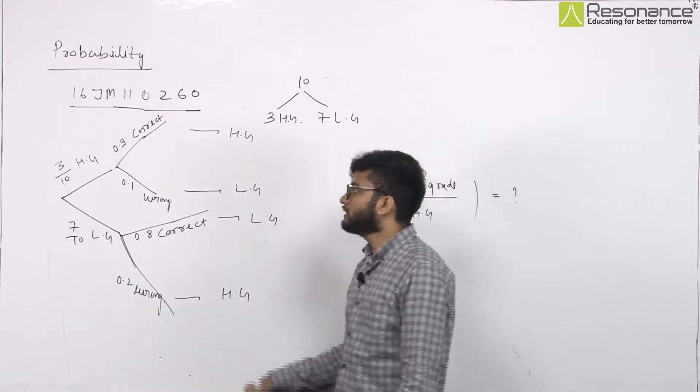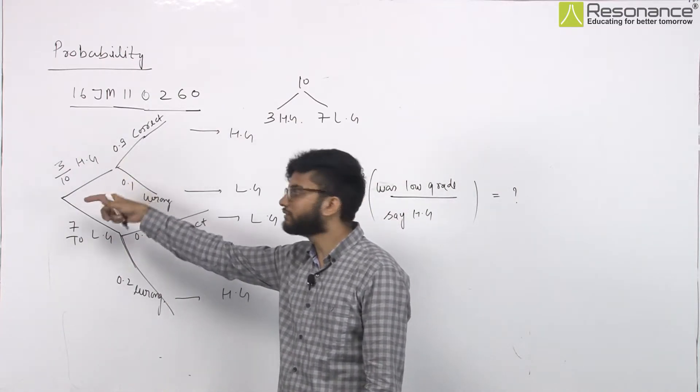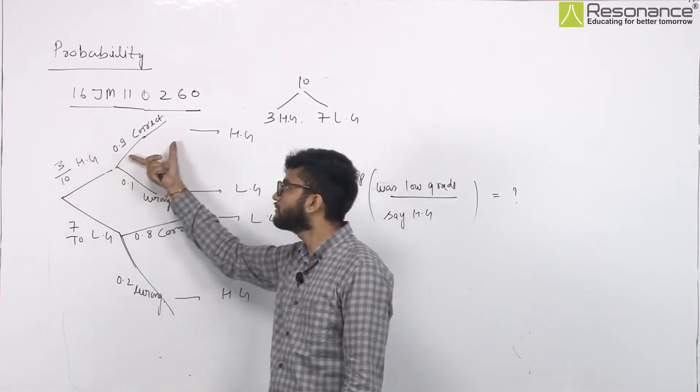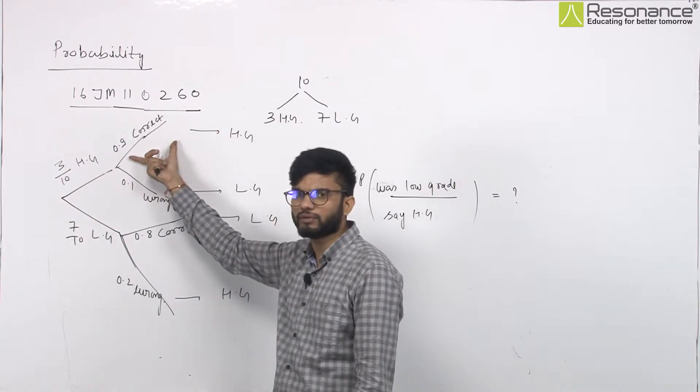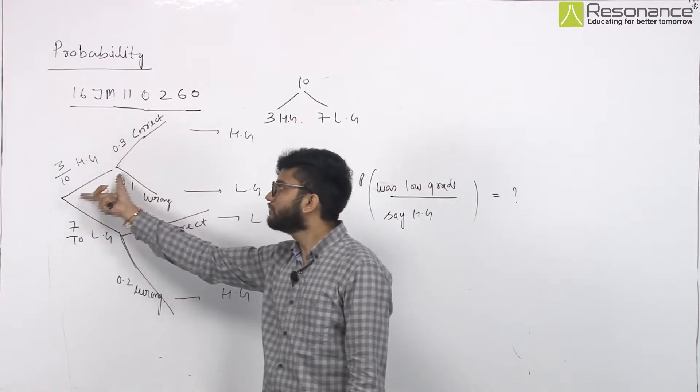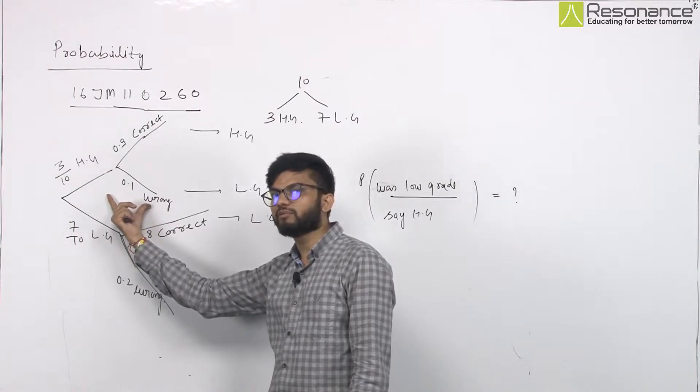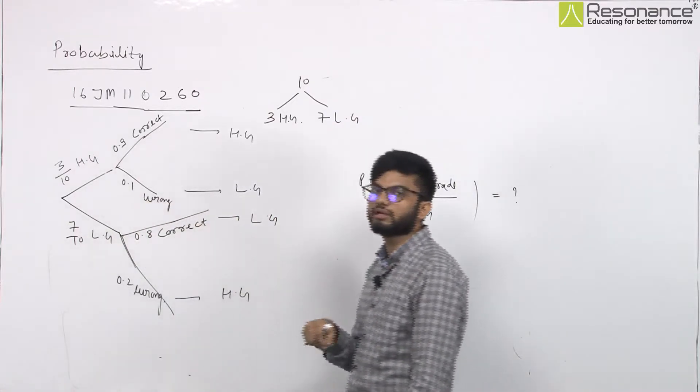And Modi ji is a T tester. They tell us that if there is a high-grade curve, if it is wrong, it tells us that the high-grade is high-grade. And 0.1 chances are wrong. They tell us that it is low-grade.